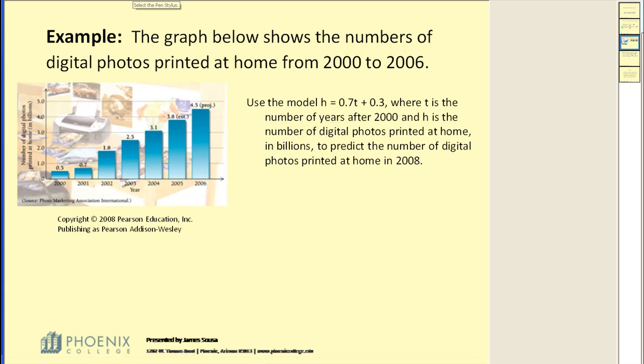Let's write this a little larger so we can see it. H is equal to 0.7T plus 0.3. Okay, now T is not equal to 2008 because T is the number of years after 2000. So for the year 2000, that would be T equal to 0.